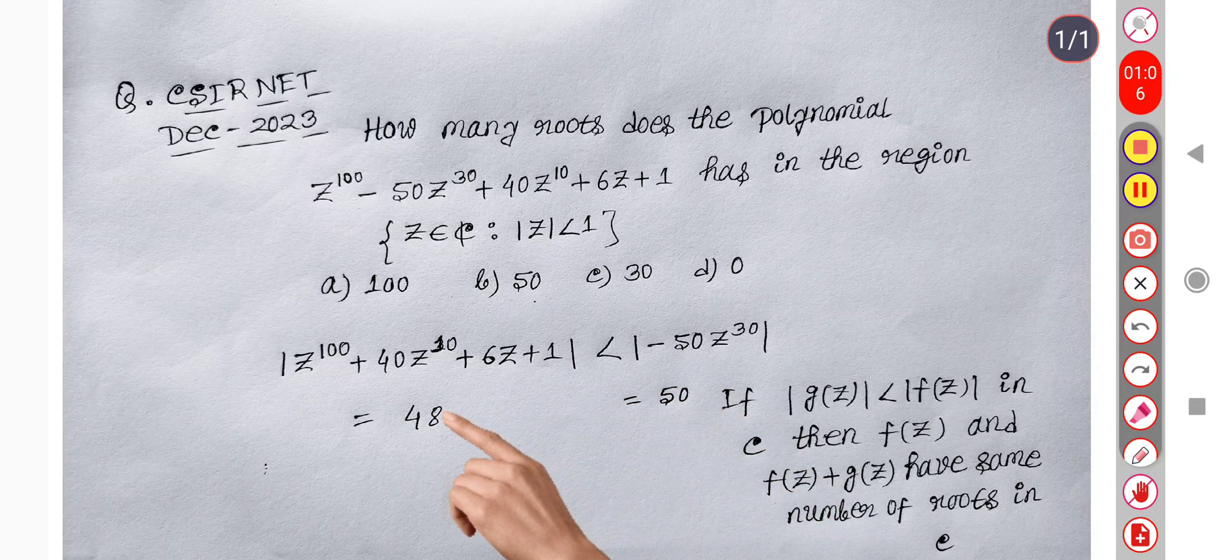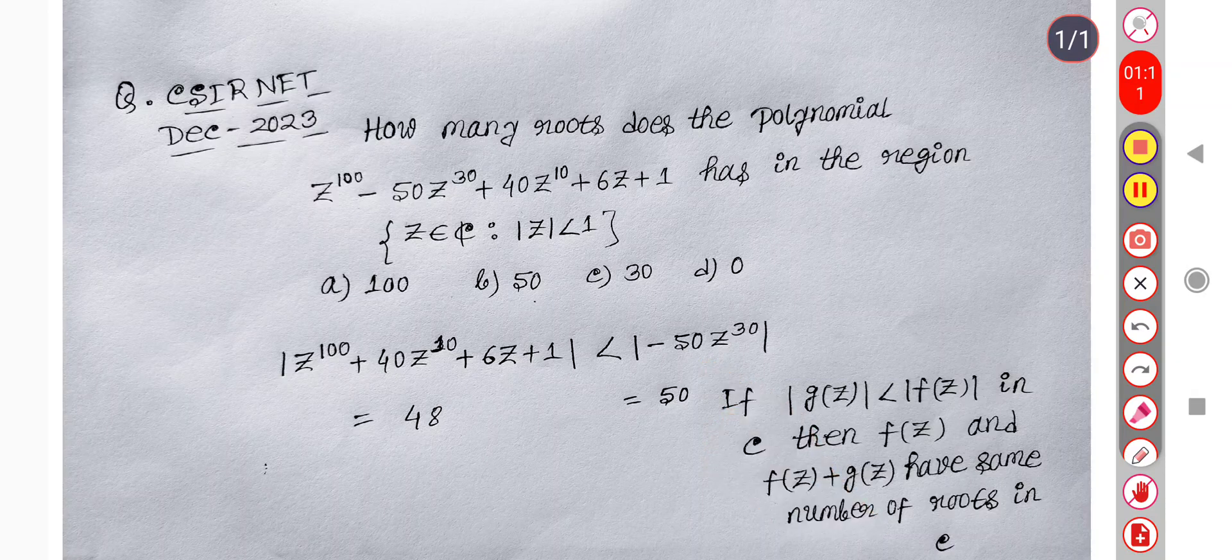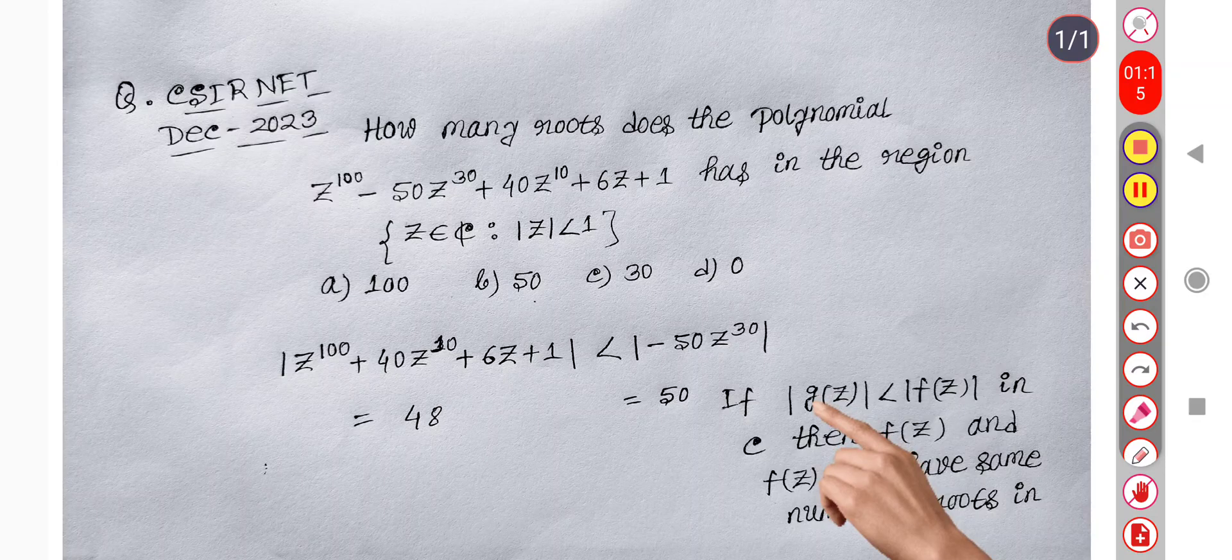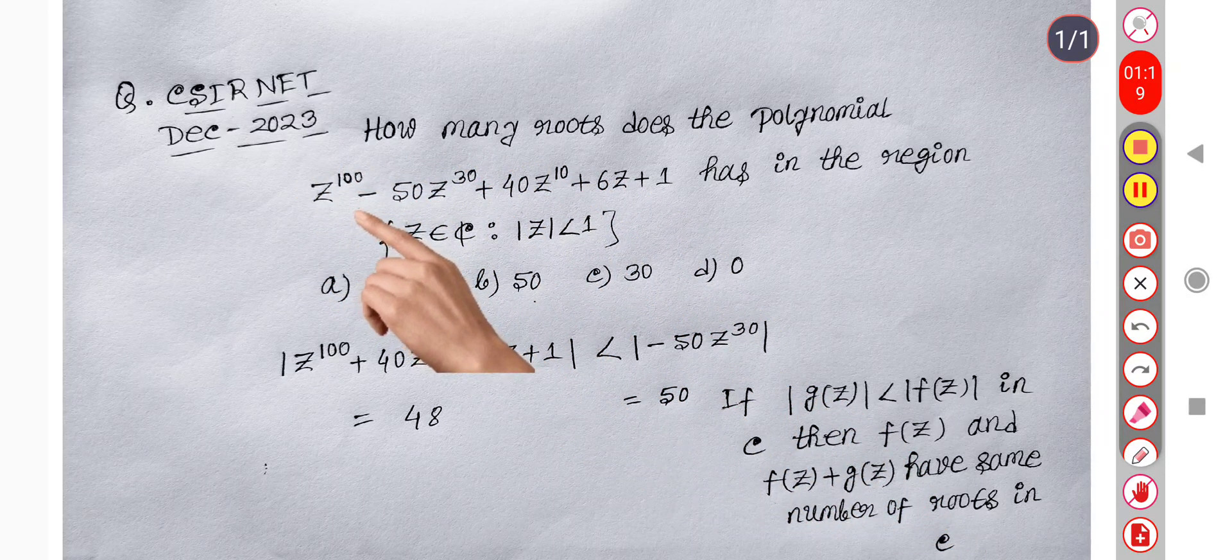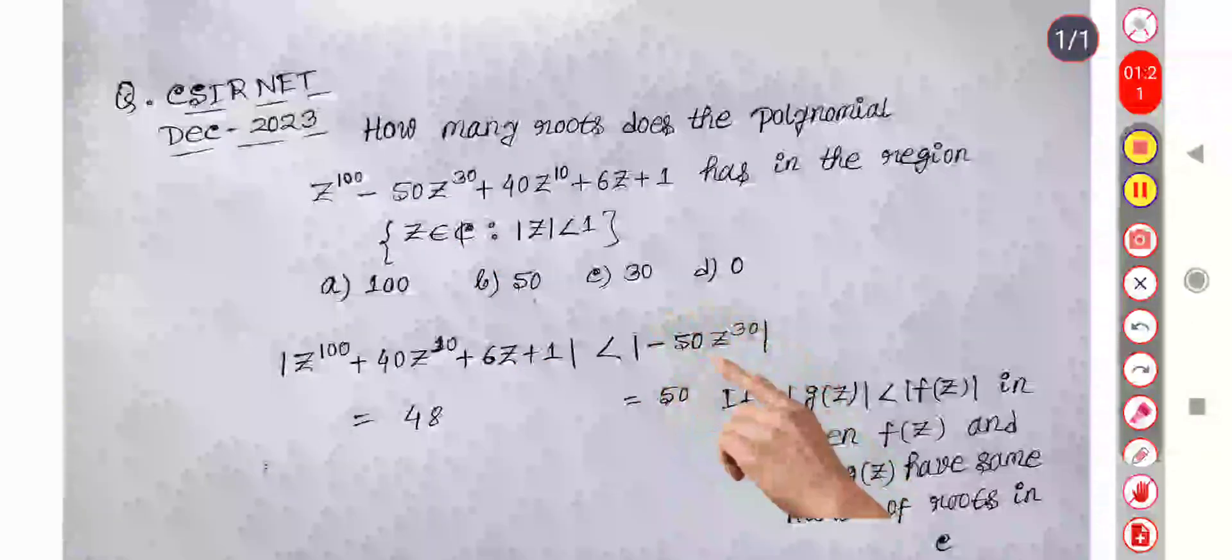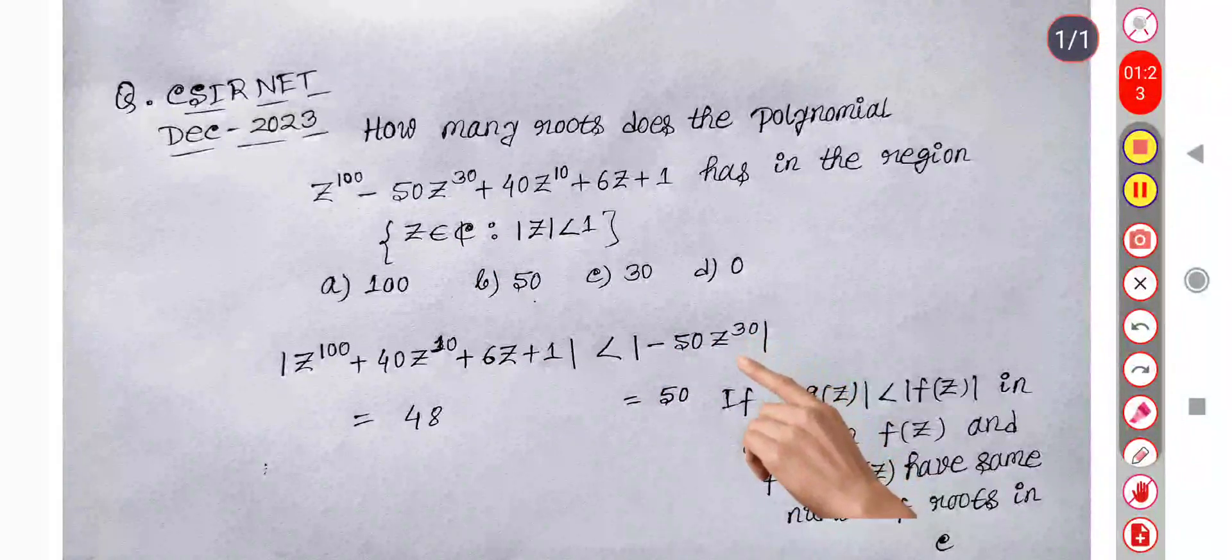So 48 less than 50, that is this function less than this function, and we know that f(z) and f(z) plus g(z) have the same number of roots. So this function has the number of roots of minus 50 z power 30.